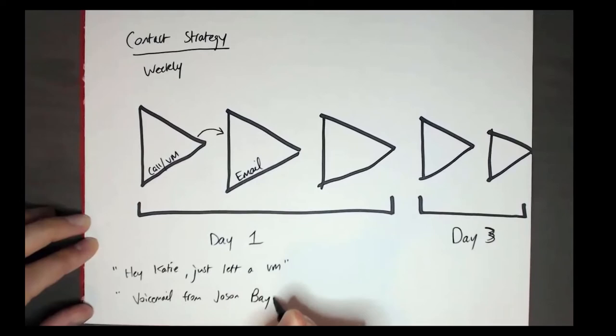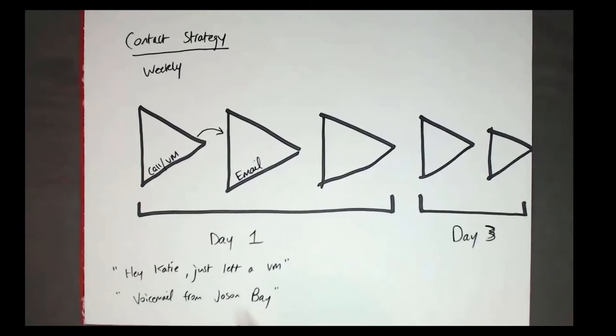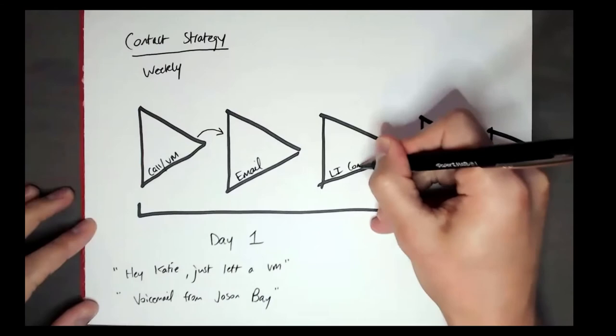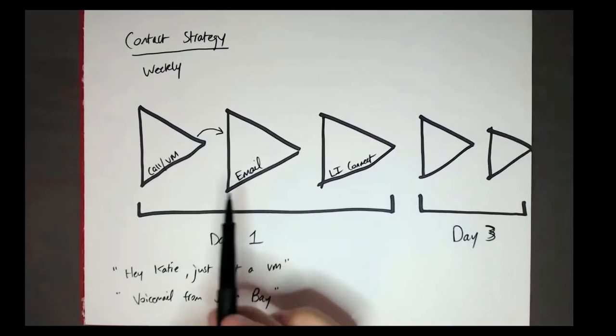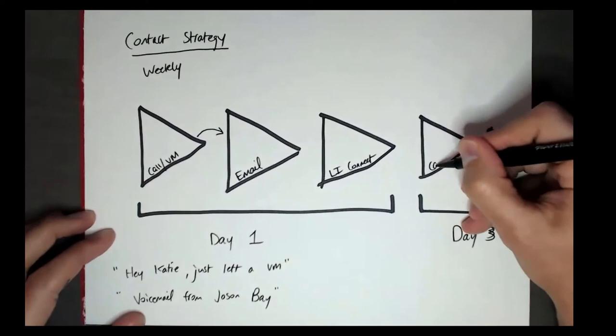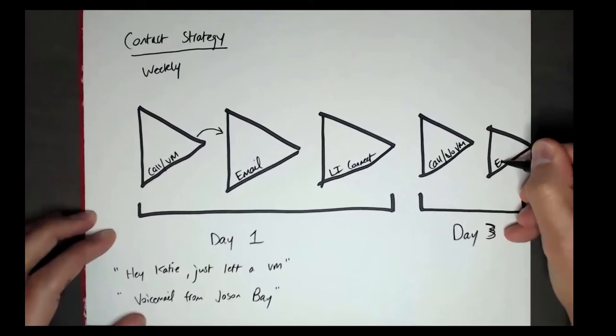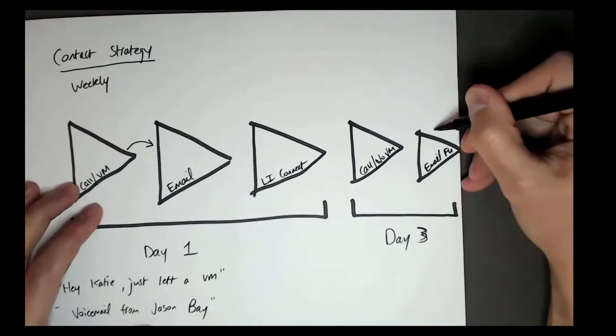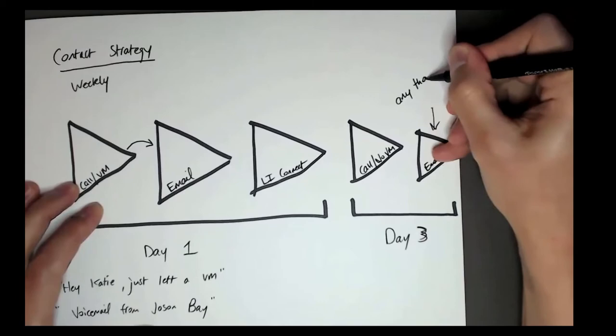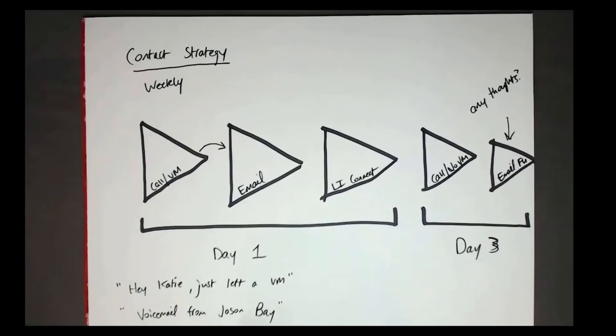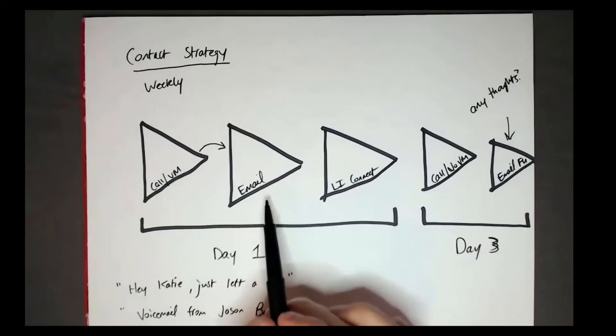The other subject line option is 'Voicemail from Jason Bay' — that almost looks like a notification email that you got a voicemail. So point the voicemail to the email, then send a LinkedIn connection request, follow them, or like and comment — some sort of LinkedIn touch. That's three touches in one day. Then on day three, you call with no voicemail, and send an email follow-up on the same thread — and that email is going to be an 'Any thoughts?' email.